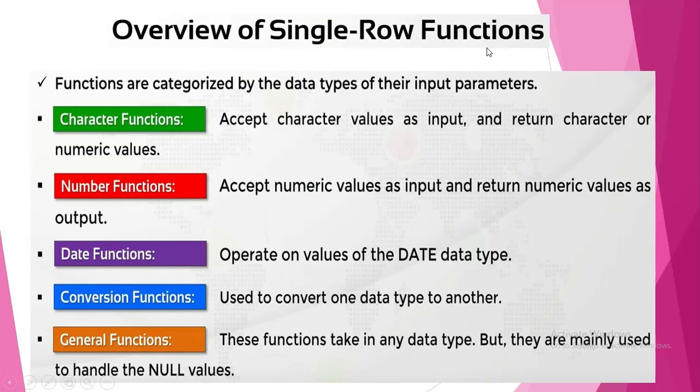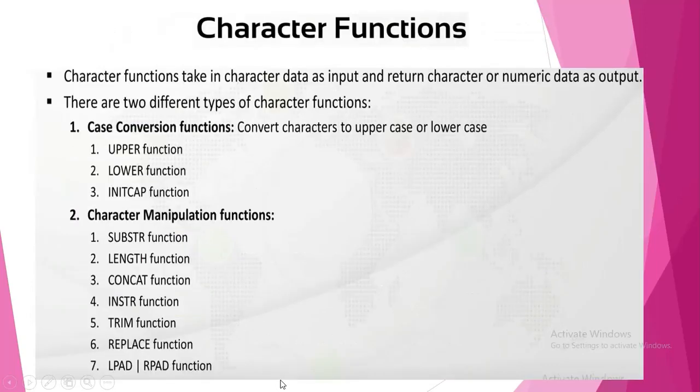Overview of single row functions. Functions are categorized by data types of their input parameters. Character functions accept character values as input and return character or numeric values. Numeric functions accept numeric values as input and return numeric values as output. Date functions operate on values of the date data type. Conversion functions used to convert one data type to another data type. General functions take in any data type, but they are mainly used to handle null values.